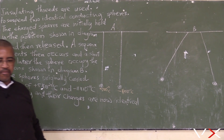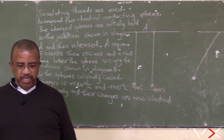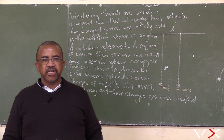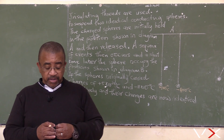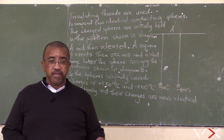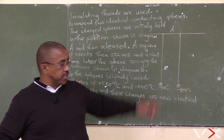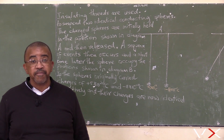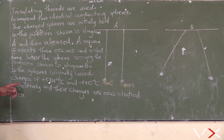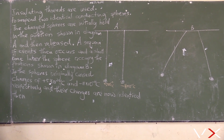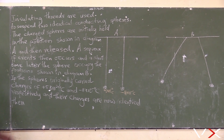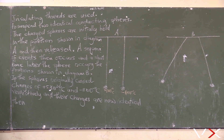This sequence of events — there was an equal distribution of charge. The charge was distributed equally. Now positive here and positive there. Then we calculate the force between the two. If the spheres originally contained five times ten to the power minus eleven coulombs and minus eleven times ten to the power minus eleven coulombs respectively, and their charges are now identical.